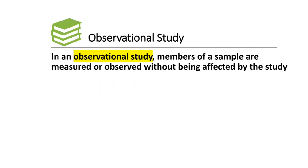In an observational study, members of a sample are measured or observed without being affected by the study — you're just looking or watching something. This is like a survey in the fact that you're not doing anything, but you're observing things in their natural place, in their natural order. You're not trying to change anything; you're just watching as it proceeds.